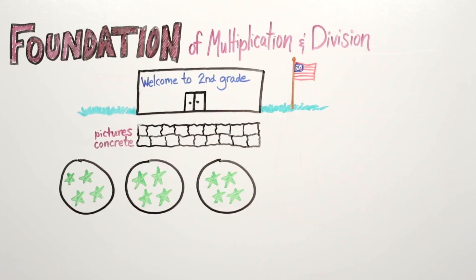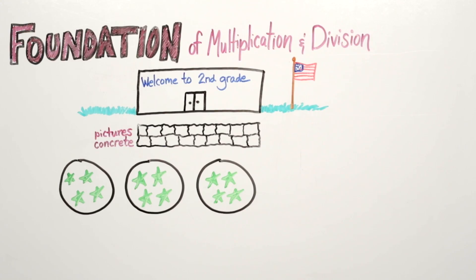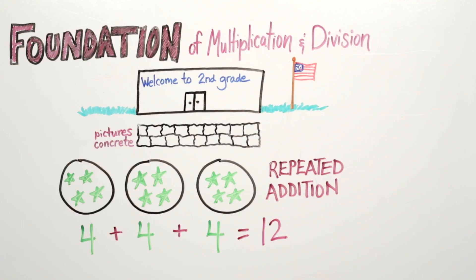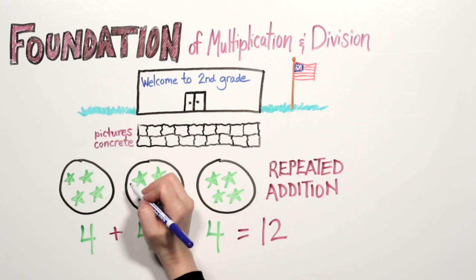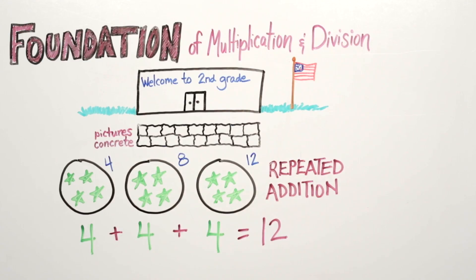Talk with your child about how he divided the stars into three equal groups and got four in each group. To find the total number of stars, we use repeated addition. He will count four stars plus four stars plus four stars equals twelve stars. Some children will recognize this as skip counting and use the skip counting strategy to find the total.